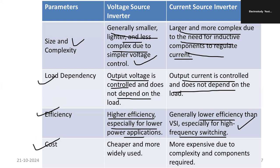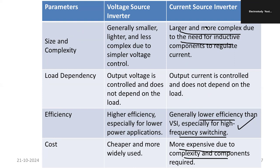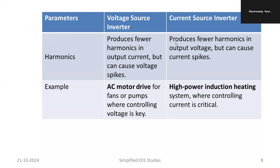Regarding cost, the VSI is inexpensive and most widely used. The current source inverter is more costly because we need to control the current conversion, take care of inductor charging and discharging, and require more protective devices for smooth operation of the CSI. That is what makes the voltage source inverter most commonly used. However, regarding switching speed, the CSI dominates.